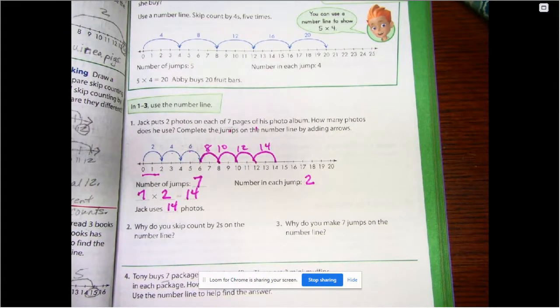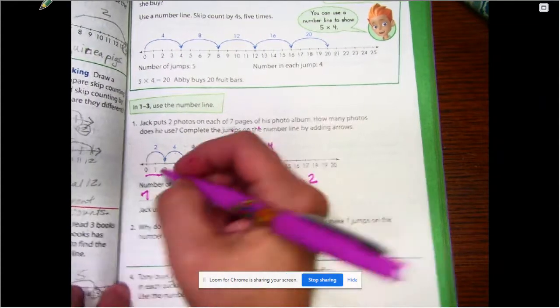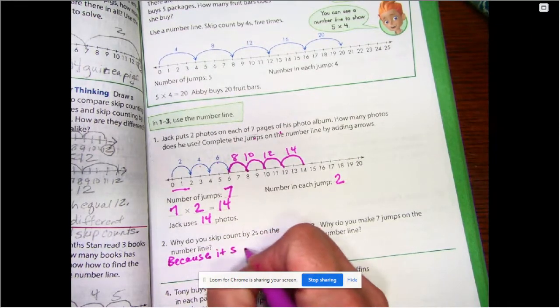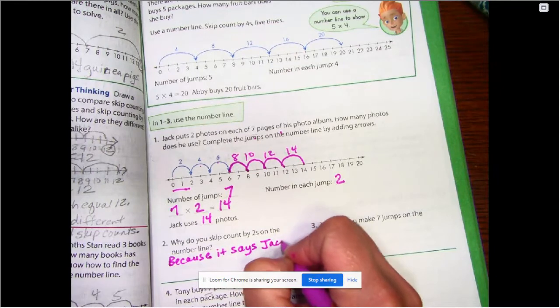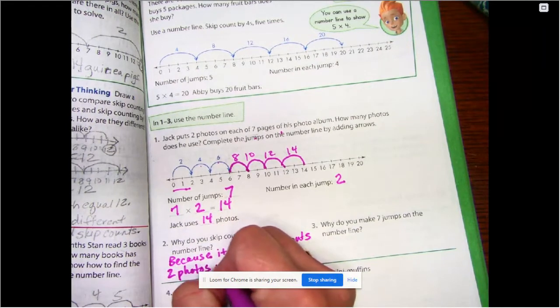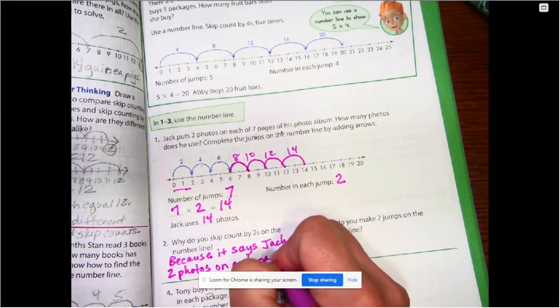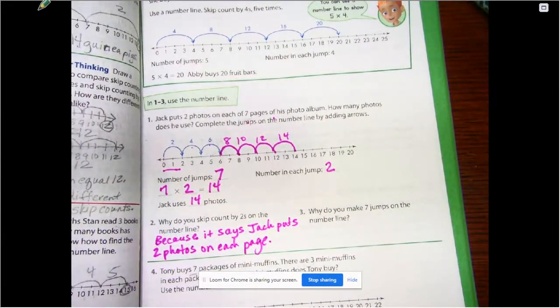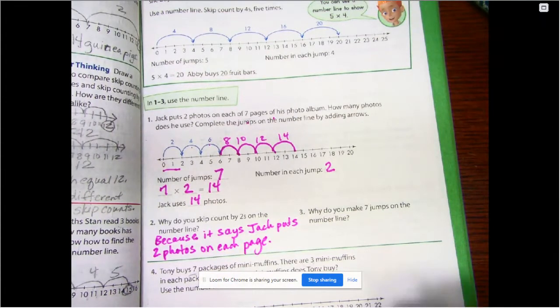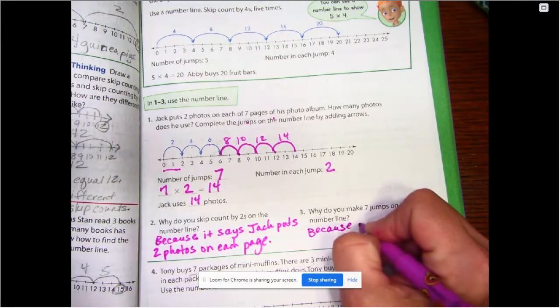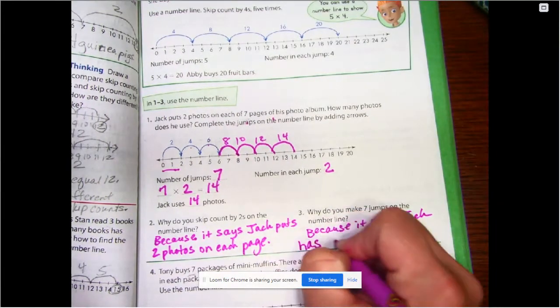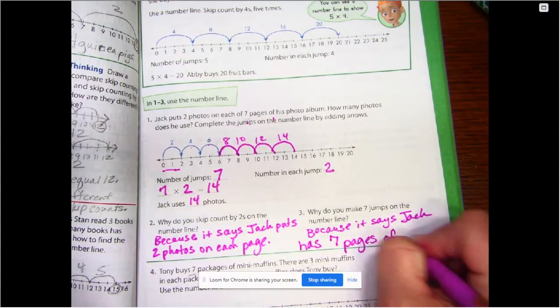Number 2 says, why do you skip count by twos on the number line? Okay, so why do we skip count? Because it says, Jack puts two photos on each page. Okay, that's why we skip count by twos because it says there were two photos on each page. Why do you make seven jumps on the number line? Because it says, Jack has seven pages of photos.